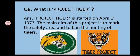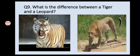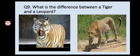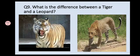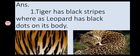Now here comes our next question: what is the difference between a tiger and a leopard? Kids, see these two pictures. The first difference is that a tiger has black stripes, whereas a leopard has black dots on its body.